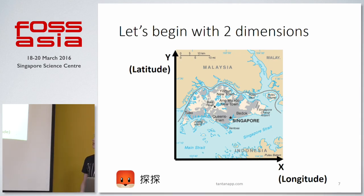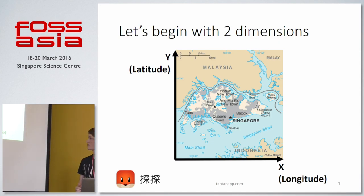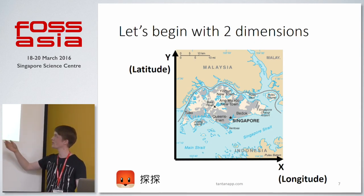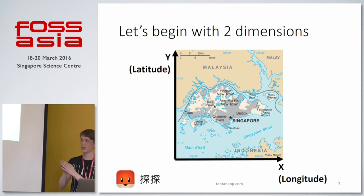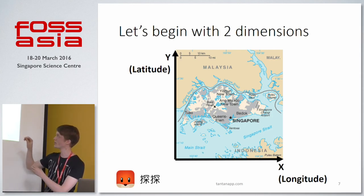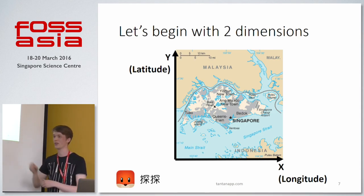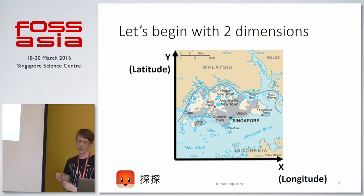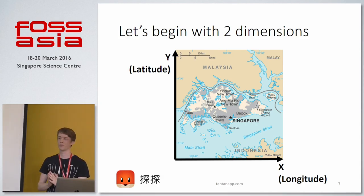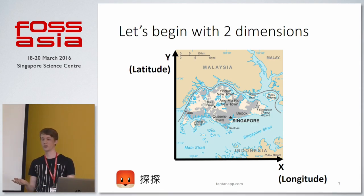Starting with two dimensions — the normal ordering just based on location — we have x for longitude and y for latitude going up. A small problem can occur if you happen to be very close to the north or south pole, or out in the Pacific Ocean, because then latitude and longitude will wrap around. But for Tantan's use case we don't have any users at the poles or in the middle of the ocean, so it's not relevant for us.